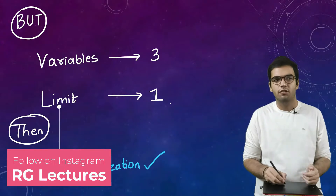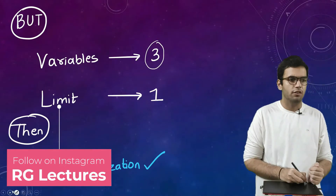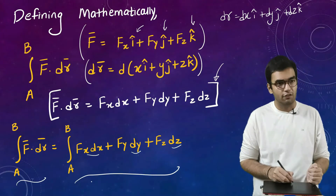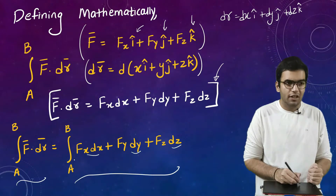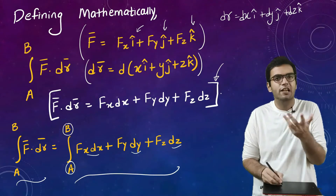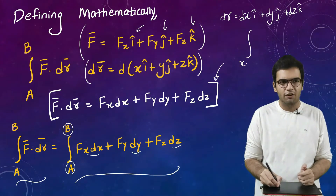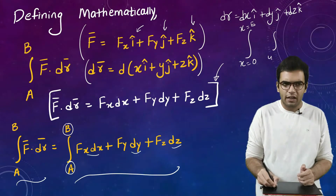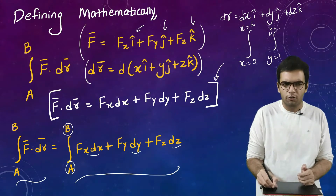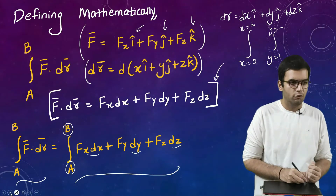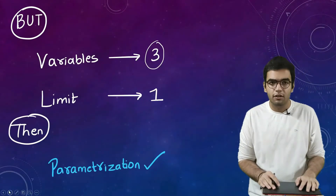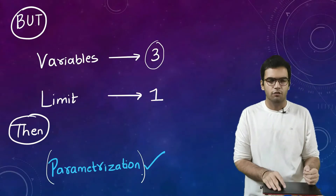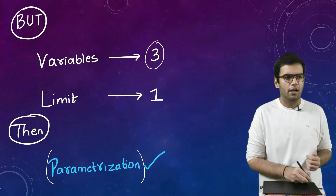There are three variables in the equation: dx, dy, and dz. But in a single integral we can substitute only one set of limits — either in x, y, or z. This is the problem, and the solution is known as parametrization. We are given a curve starting from A and ending at B, and for that curve we are also provided with its equation.